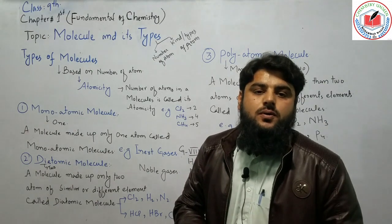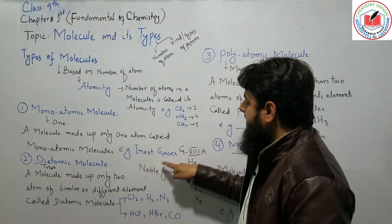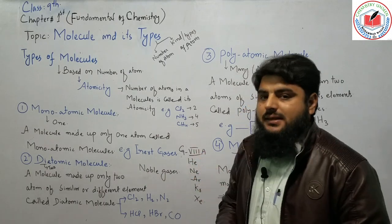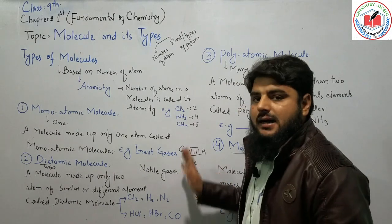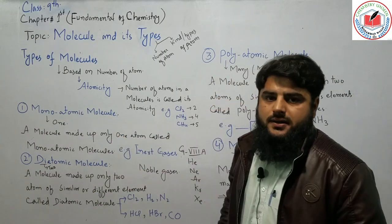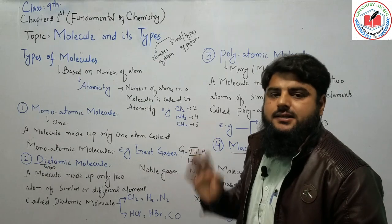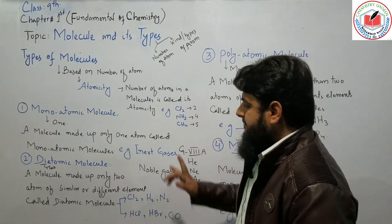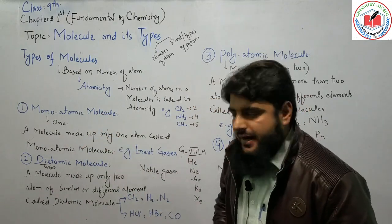Monoatomic molecules exist as single atoms and are found in noble gases — also called Group 18 or inert gases. Examples include helium, neon, argon, krypton, and xenon. These elements exist independently as single atoms.